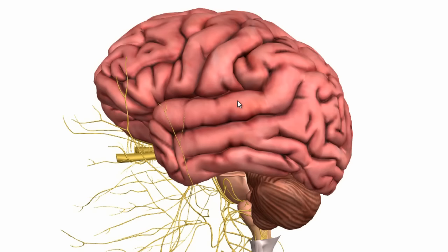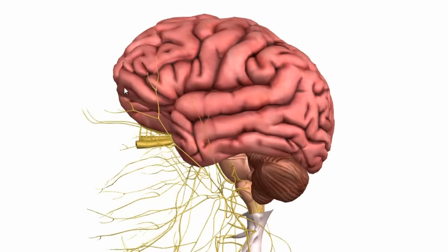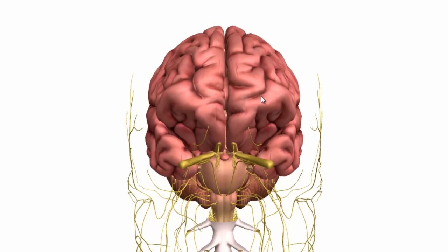The cerebral hemispheres are what most people think of when they think of the brain. You've got a right and a left cerebral hemisphere, and they are responsible for higher functions such as thinking, memory, consciousness, language, emotion, movement, and sensory perception. The cerebral hemisphere consists of an outer cortex made up of six layers of grey matter, and the inner portion is made up of white matter.